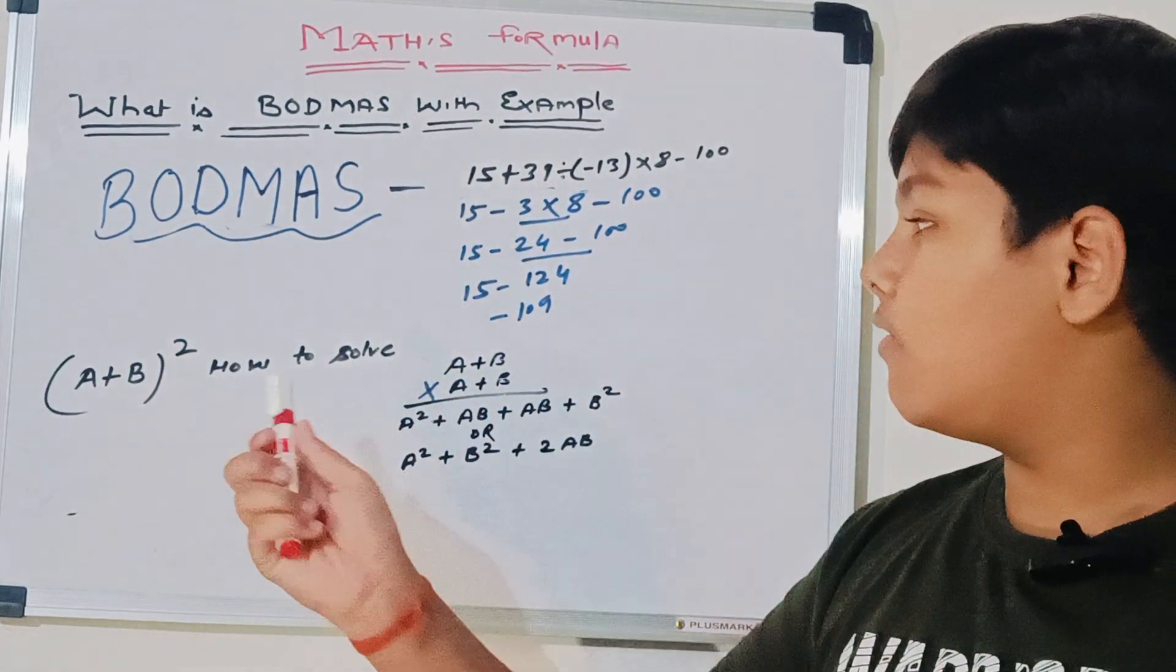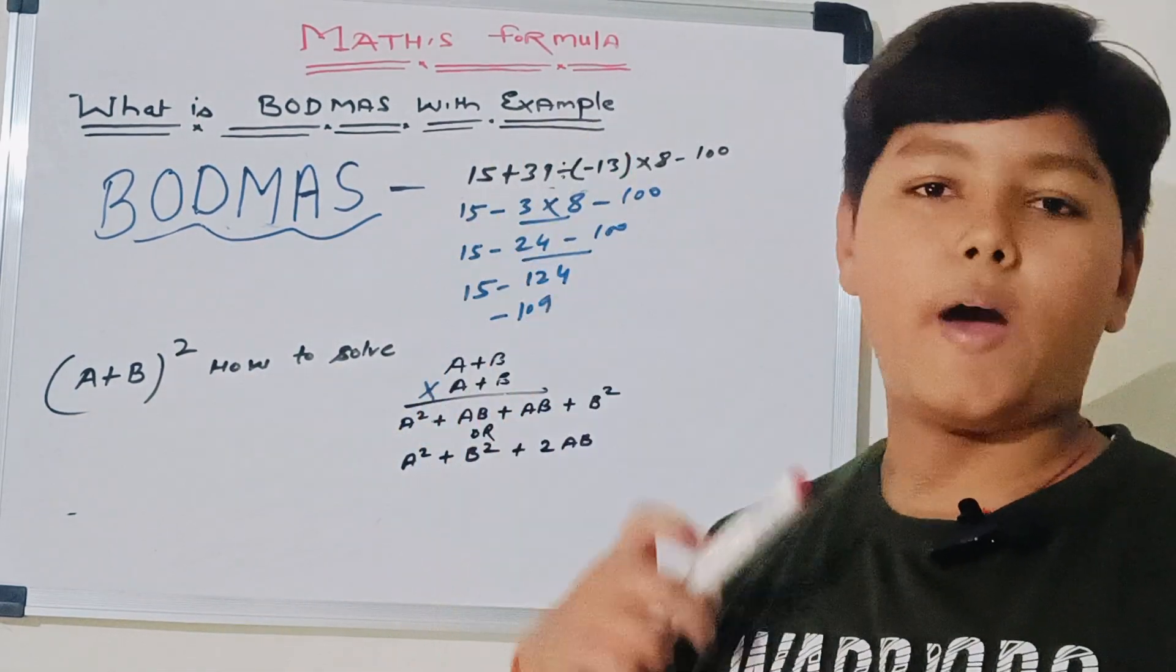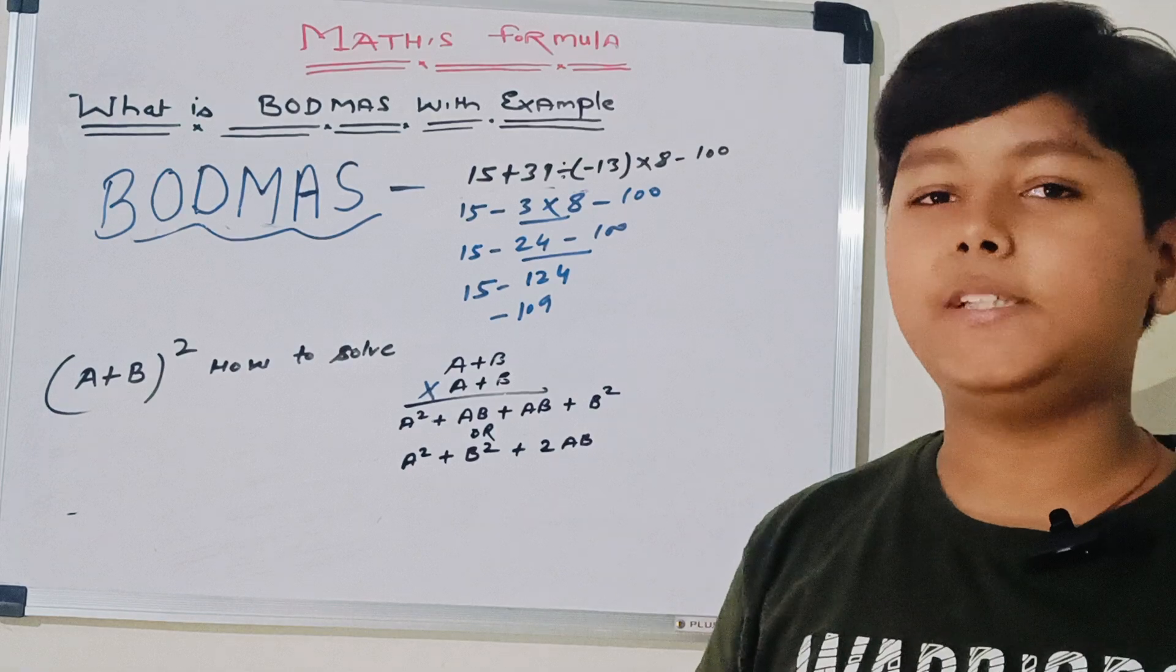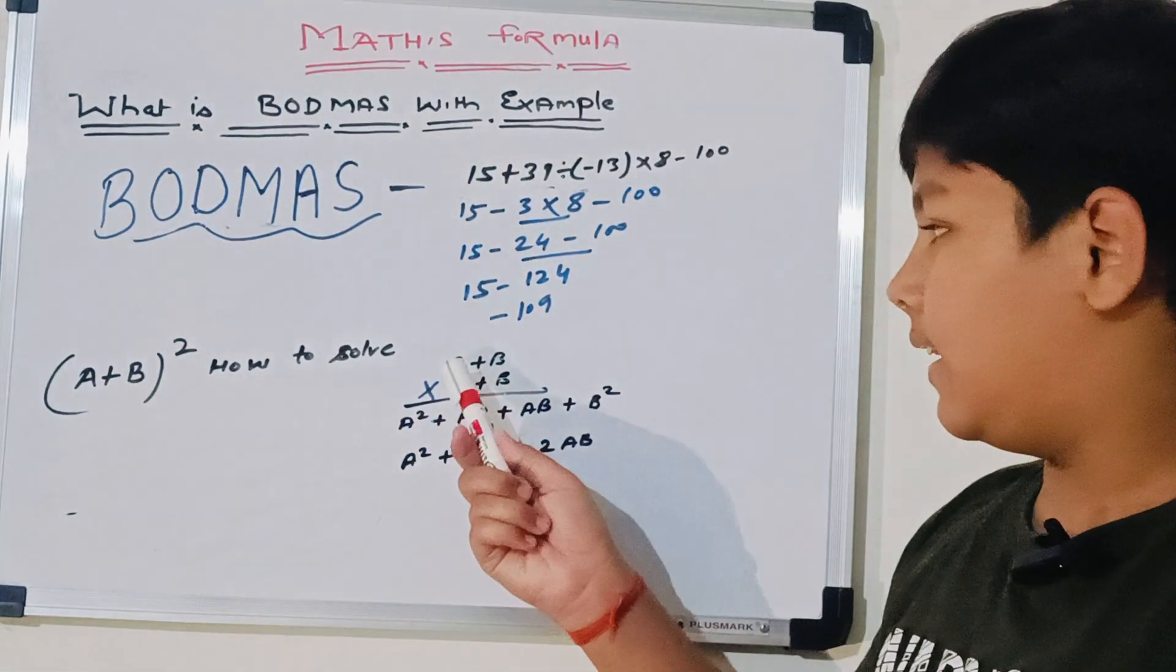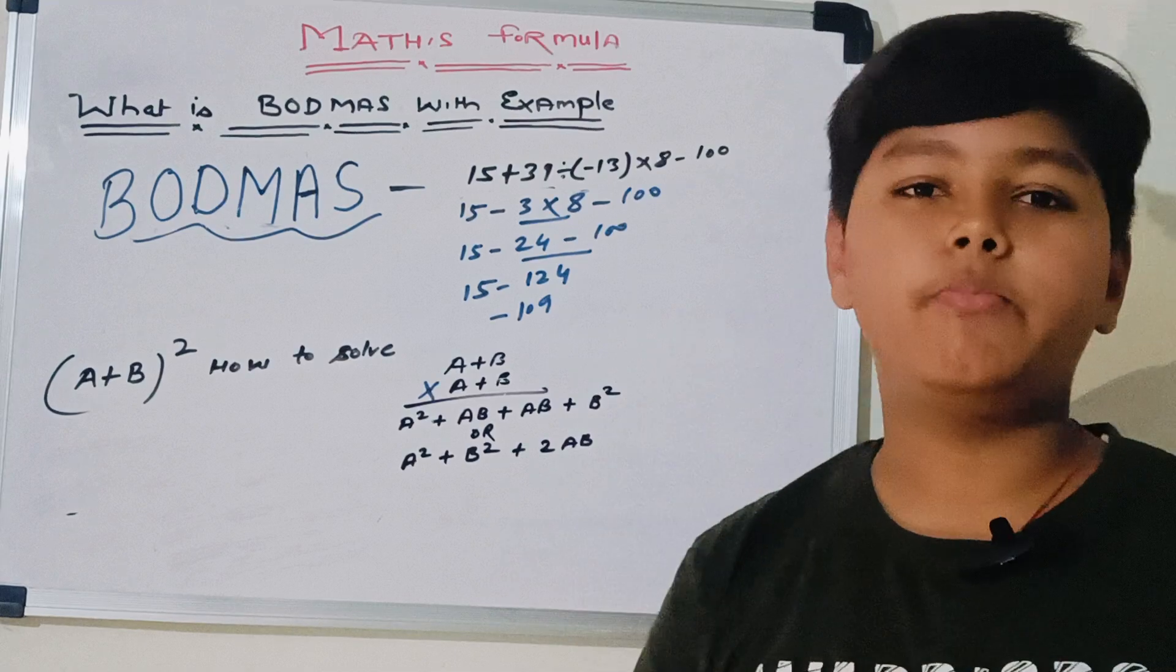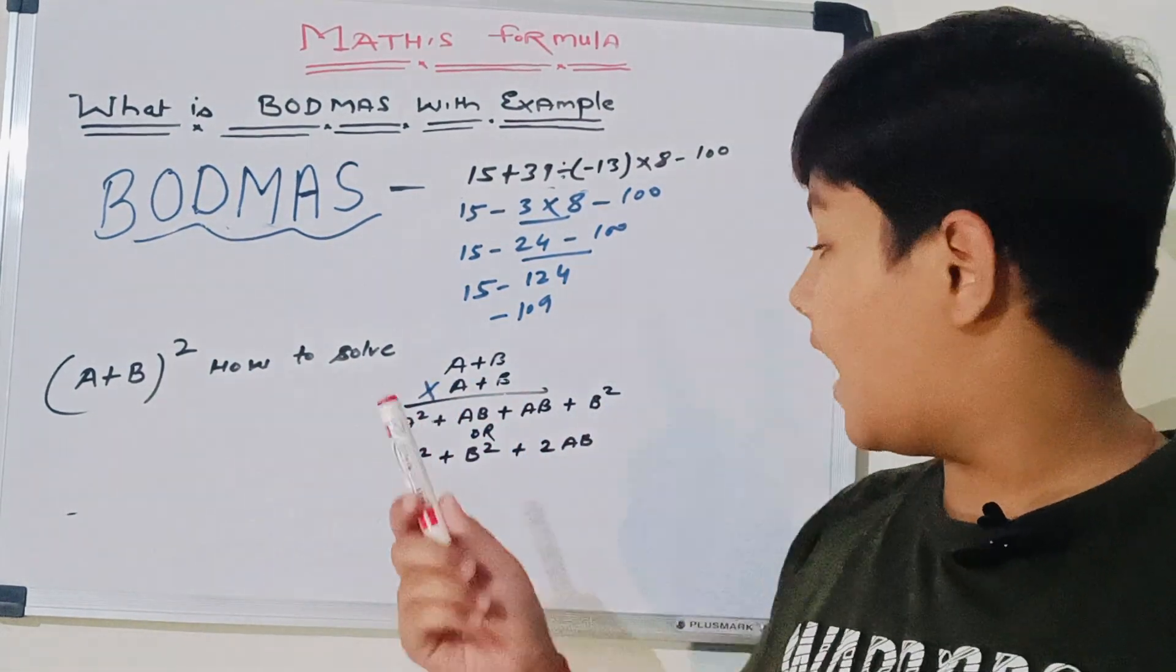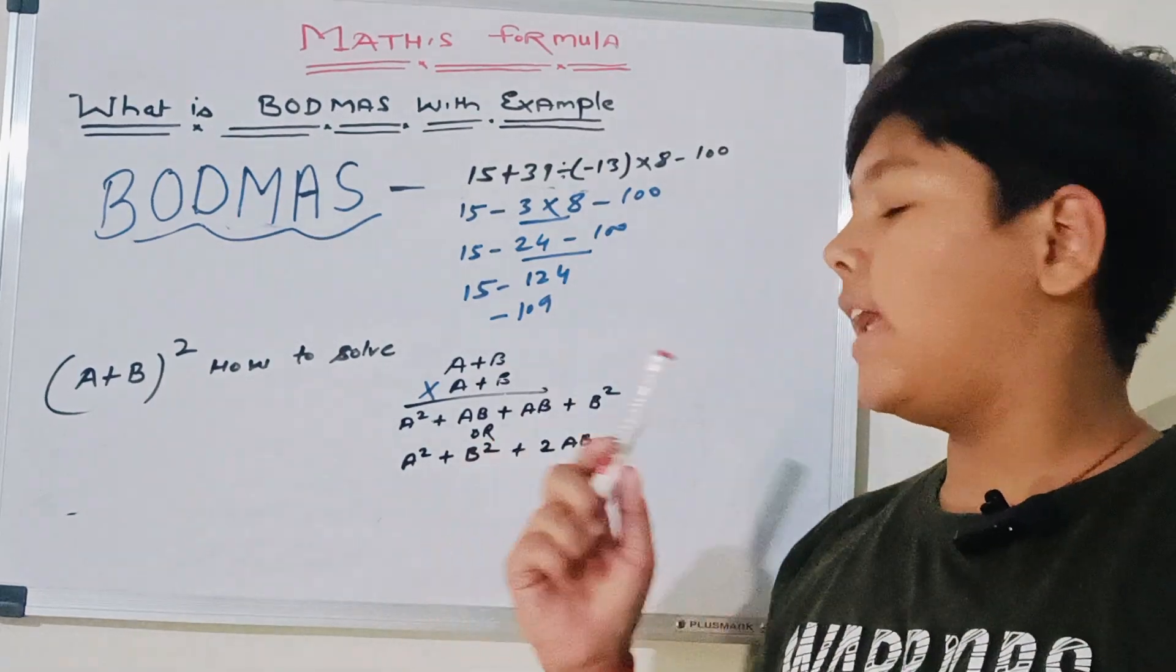So let's solve the formula. In formula, we are taking a plus b whole square. So how to find a plus b whole square? Then write a plus b multiplied by a plus b. In variables, we have to start from the left side, not from the right side as we start with the numbers.